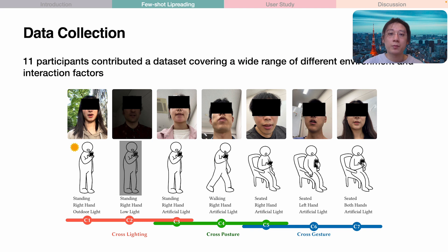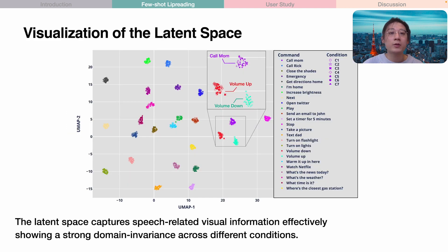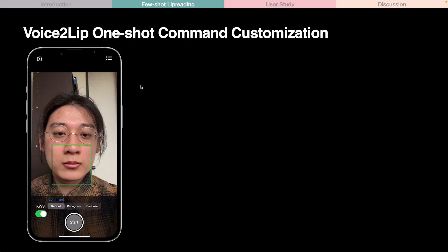To evaluate the model's performance, especially in complicated environment configurations, we collected a real-world dataset covering different lighting conditions, user postures, and holding gestures. We visualize the latent space using UMAP for dimension reduction. As shown in the figure, the model effectively captures speech-related facial information, and the recording condition has only a subtle influence on the features. To minimize user effort in command registration, we introduce a voice-to-lip technique that incorporates speech recognition to automatically learn lip reading from the voice input.